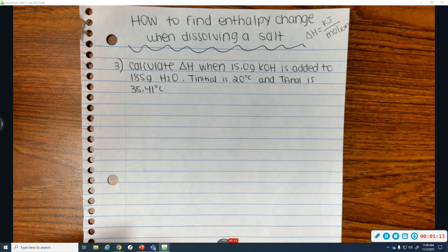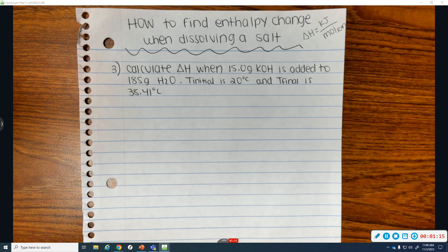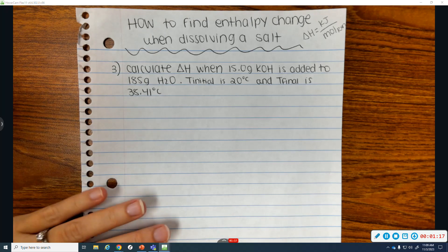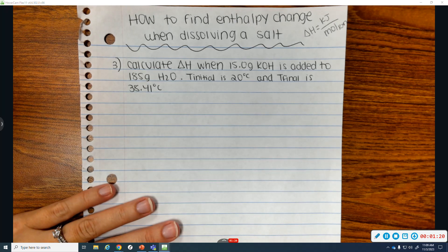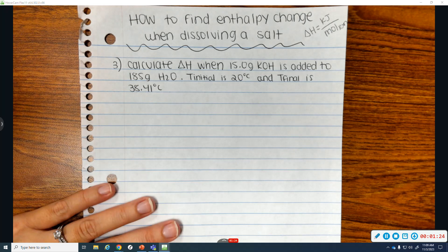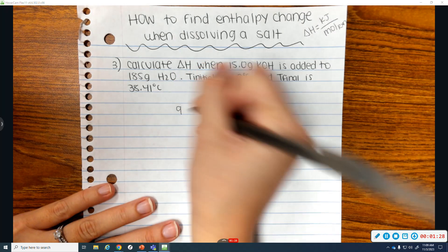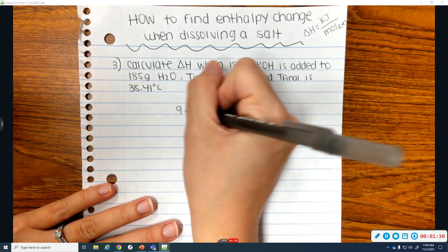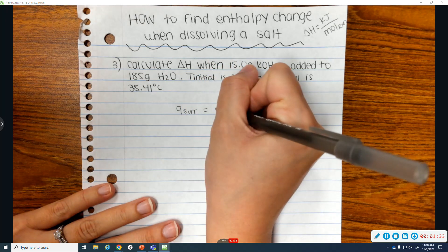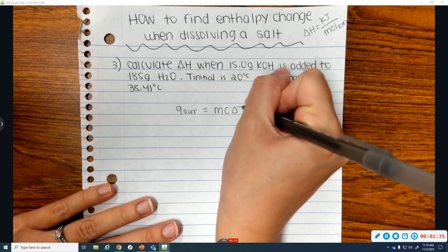So the first thing you want to do when you are trying to find your enthalpy change is you need to solve for how much heat the system either absorbed or released. Your temperatures are always temperatures of the system, not the surroundings. And the surroundings had a temperature change. So the Q for my surroundings, because it's a temperature change, I'll use MCAT.